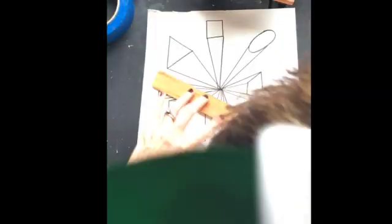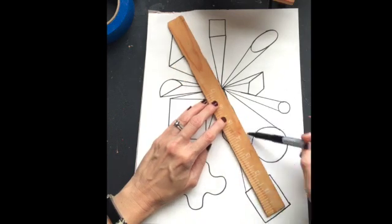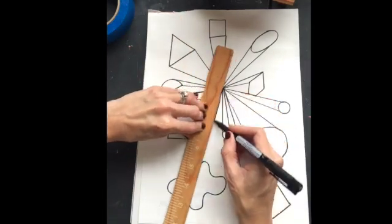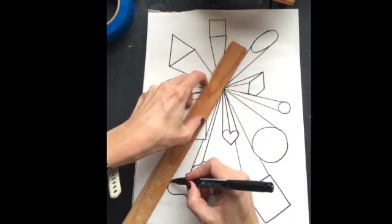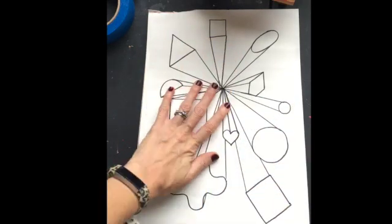And as I draw these lines or connect these dots my shapes will start to appear. They will start to appear like they're three dimensional. Not every shape is going to have a line because as you see some of those shapes go behind each other.